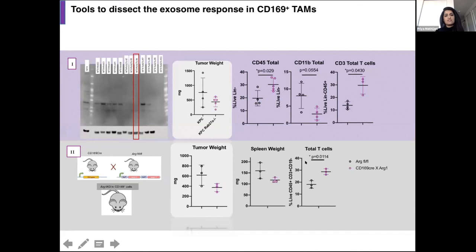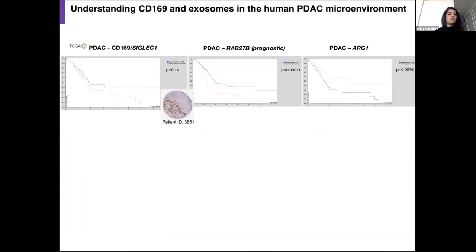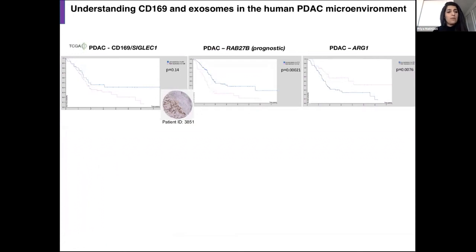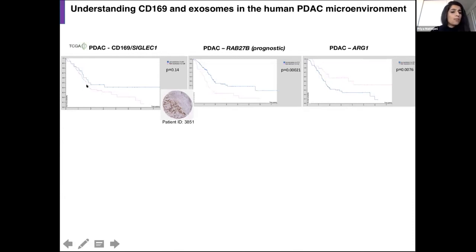None of this matters if this receptor is not involved in the human situation. Using the TCGA dataset, I plot high and low CD169-expressing tumors on a Kaplan-Meier curve and find that high expressors of CD169 have a lower probability of survival than low expressors. This is also true of RAB27B and arginase, both of which show a prognostic difference between high and low expression. To look at individual cell types — one fruit at a time from the smoothie — I reanalyze data from a Chinese study of 24 PDAC patients using Seurat analysis.